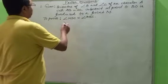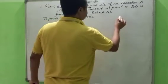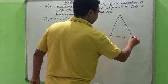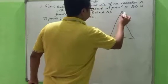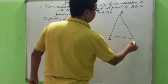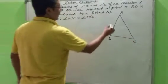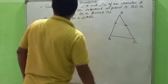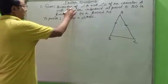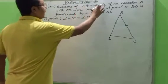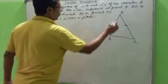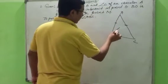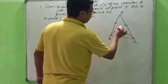So here the first one — the triangle is an isosceles triangle ABC with AB equals to AC. That is given. The bisectors of angle B and angle C meet at point O.